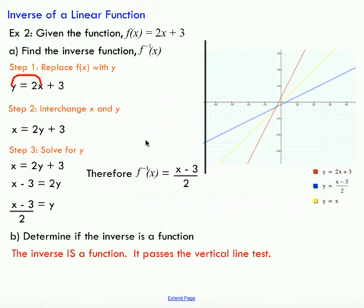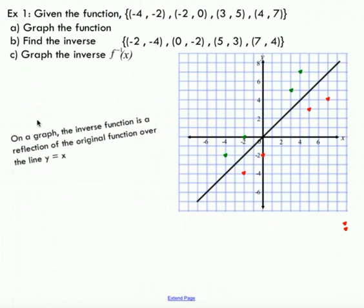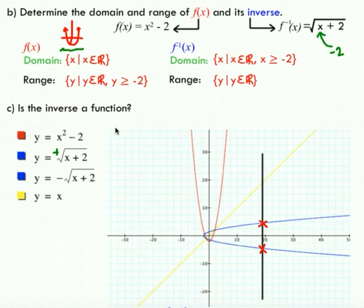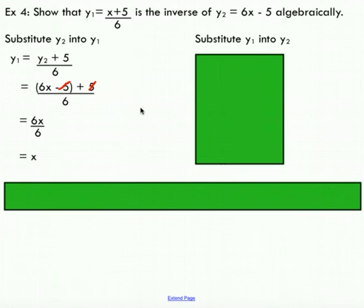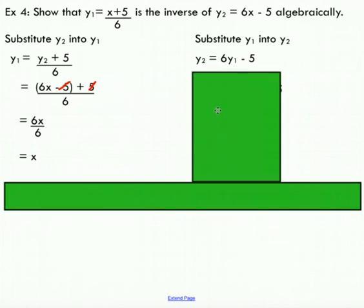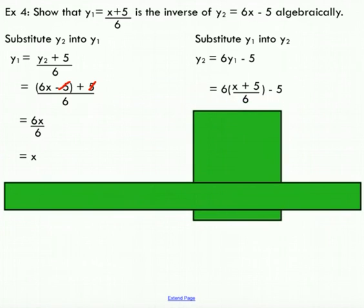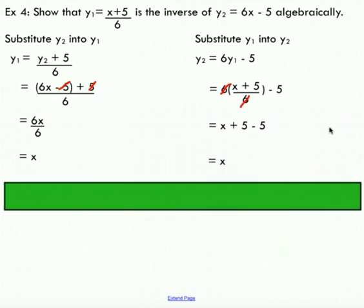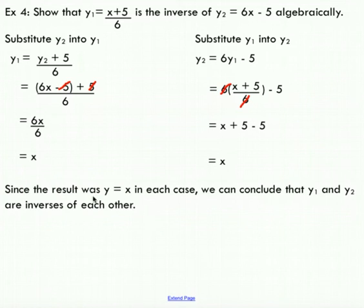I clean up the expression — the fives cancel nicely, and I'm left with 6x over 6, which equals x. Interesting that I got x back! That makes sense because inverse functions are a reflection over the line y equals x. Then I substitute y1 into y2 — the sixes cancel, the fives cancel, and we again end up with x. Since our result was x in both cases, we can conclude that y1 and y2 are in fact inverses of each other.